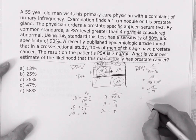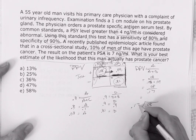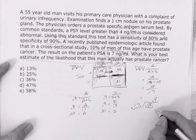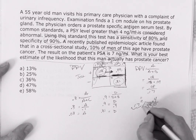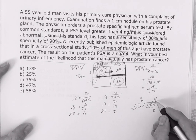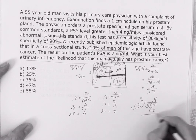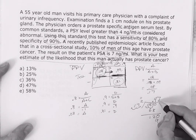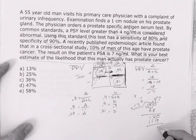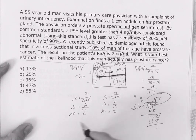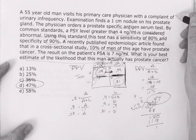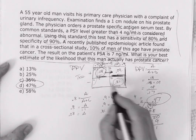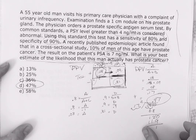Positive predictive value equals a over a-plus-b, which is 0.08 over 0.08 plus 0.09, giving us 0.08 over 0.17. Dividing 0.08 by 0.17 gives approximately 0.47, or 47%. The key with this problem is recognizing you're looking for positive predictive value. Draw your box, fill in the given values, and it follows naturally.